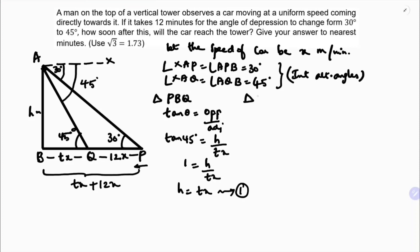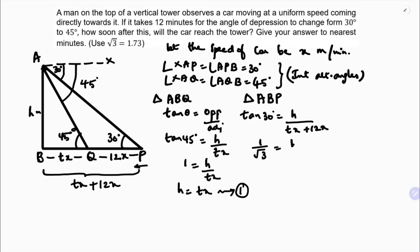Now in triangle ABP, I apply tan 30. The opposite is h and the adjacent is the total distance, which is t-x plus 12x. So tan 30 equals h by (t-x plus 12x). The value of tan 30 is 1 by root 3, so 1 by root 3 equals h by (t-x plus 12x).